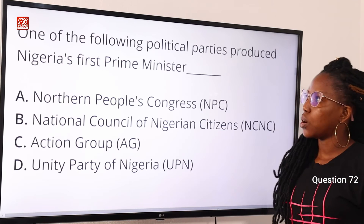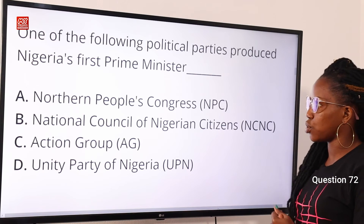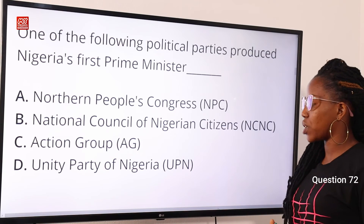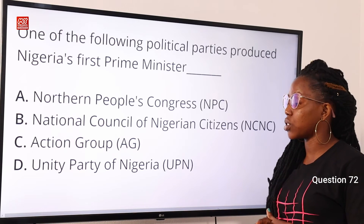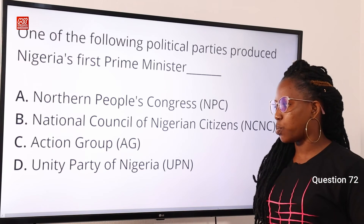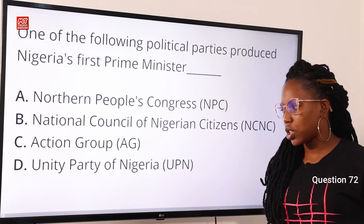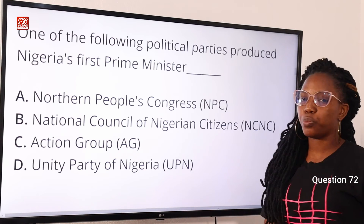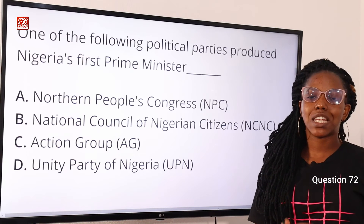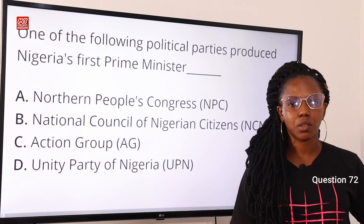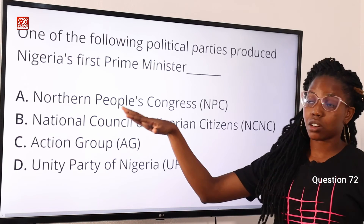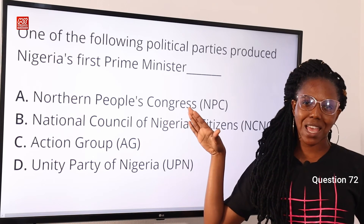Question 72: one of the following political parties produced Nigeria's first prime minister — option A, Northern People's Congress, NPC; option B, National Council of Nigerian Citizens, NCNC; option C, Action Group, AG; option D, Unity Party of Nigeria, UPN. The answer is option A, Northern People's Congress. In 1957, Nigeria produced its first prime minister in the person of Tafawa Balewa through the Northern People's Congress, NPC.